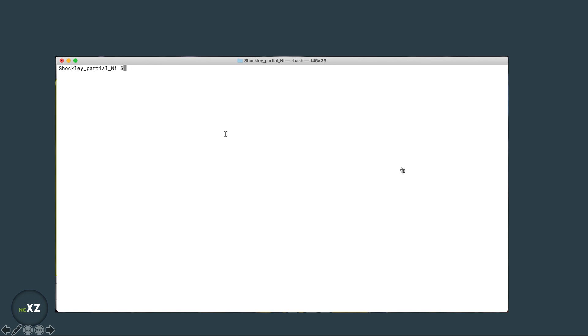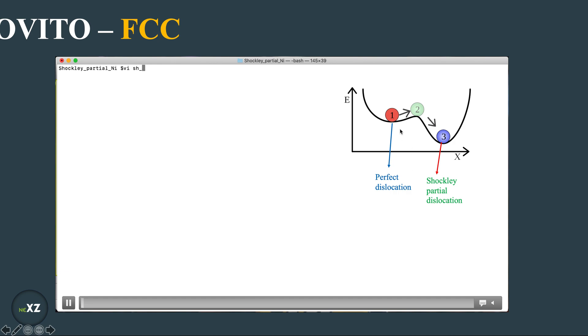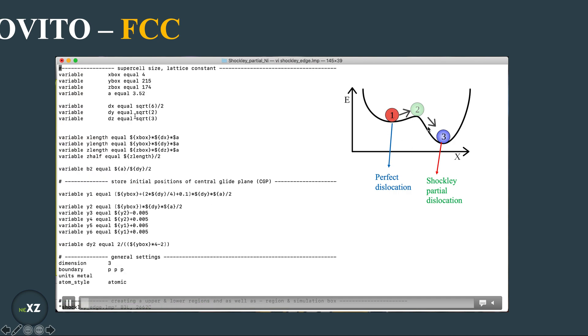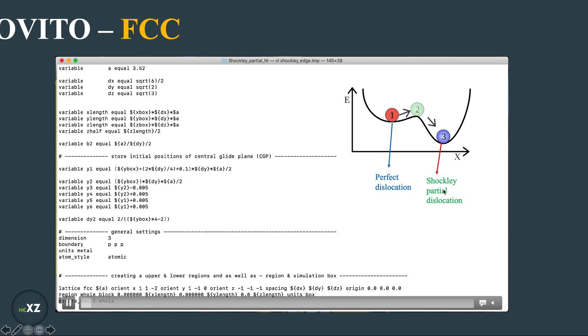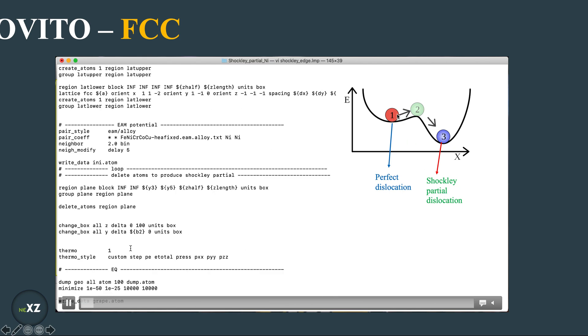Now let's see how we can make this video in OVITO. Now what I do is I have perfect dislocation which is an intermediate stable state but this is the most stable state Shockley partial. So to see this intermediate stable state initially...